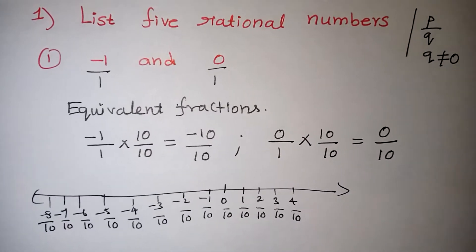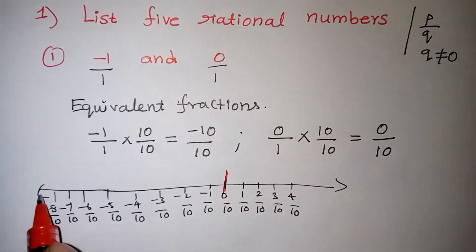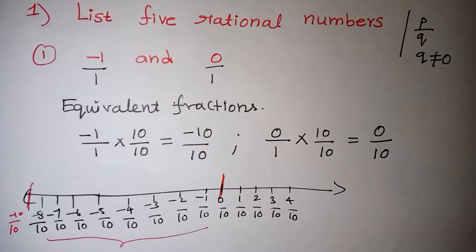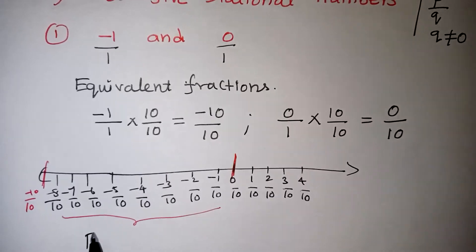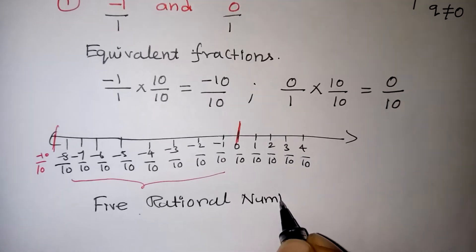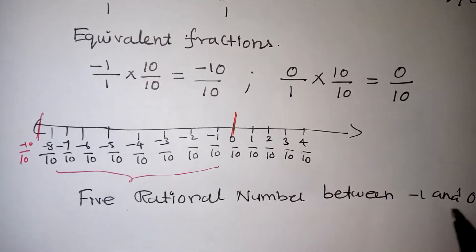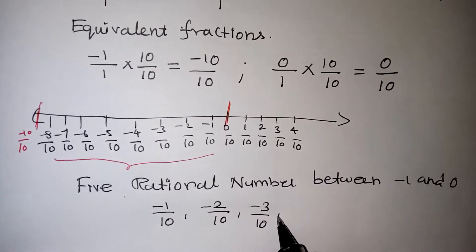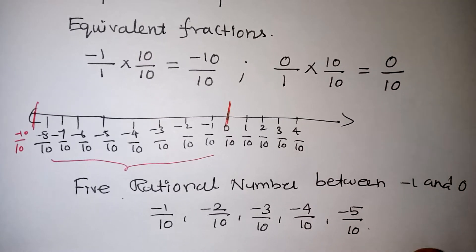Now we need to get 5 rational numbers between 0 over 10 and minus 10 over 10. In between these two we have many numbers, and we can select any 5. Our question is between minus 1 and 0. From that range we can write: minus 1 by 10, minus 2 by 10, minus 3 by 10, minus 4 by 10, minus 5 by 10. These are the 5 rational numbers between minus 1 and 0.